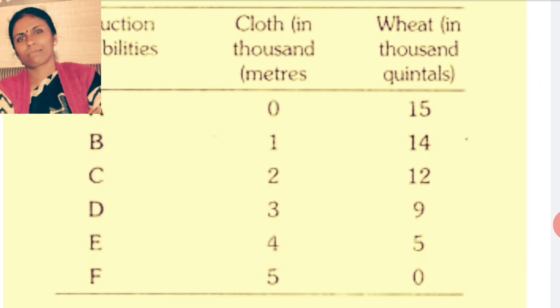Combination A: 0 meters of cloth and 15,000 quintals of wheat. For B: 1,000 meters of cloth and 14,000 quintals of wheat. For C: 2,000 meters of cloth and 12,000 quintals of wheat. For D: 3,000 meters of cloth and 9,000 quintals of wheat. For E: 4,000 meters of cloth and 5,000 quintals of wheat. One thing is 100% clear here — if you want to produce more of one commodity, we have to reduce the production of another. That means an opportunity cost concept is there, and because of this the production possibility curve is concave.